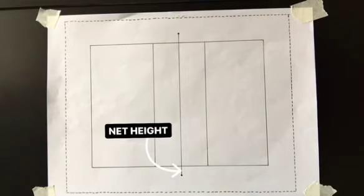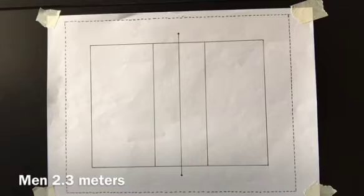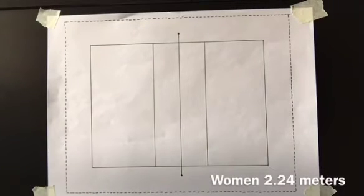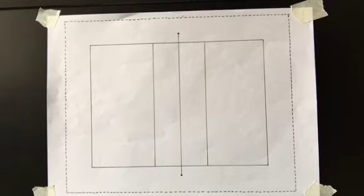For the net height, men and women will use different heights where men use 2.3 meters while women will use 2.24 meters. Free zones at a minimum of 3 meters are required around the entirety of the court with generous clearance up to 5 meters on the side and 6.5 meters in the back.